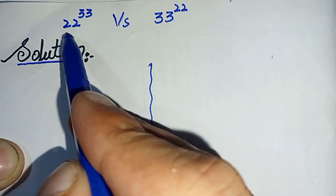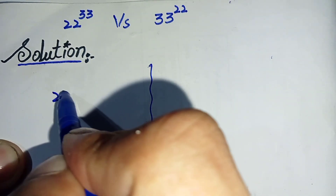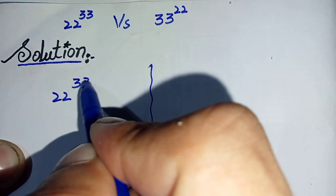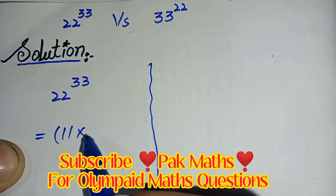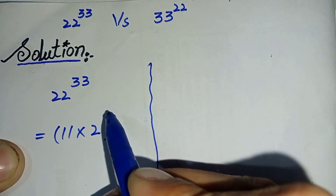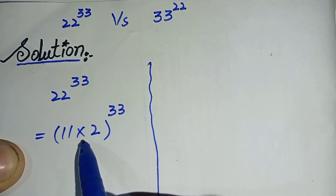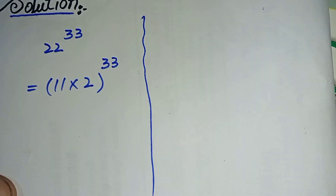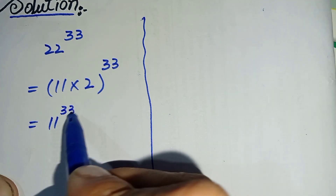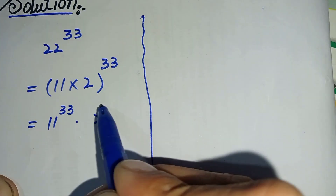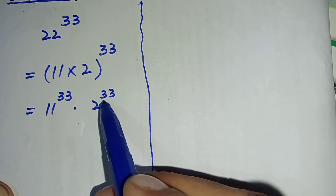First we will simplify the number 22 raised to the power 33. We can write 22 as 11 multiplied by 2, raised to the power 33. Now we will split this power on both the numbers, so it will become 11 to the power 33 multiplied by 2 raised to the power 33.